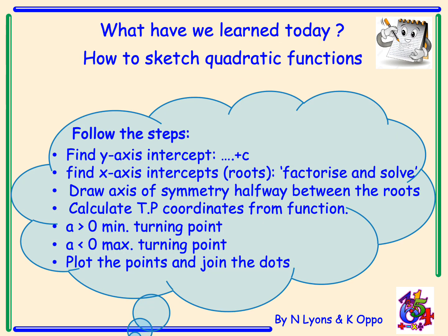So what have we learned today? We've learned how to sketch quadratic functions. We've learned the following steps. Step 1: find the y-axis intercept. Step 2: find the x-axis intercepts. These are called the roots of the quadratic function and to do that we have to factorize and solve our equation. We then have to draw the axis of symmetry which is halfway between the roots. Calculate the turning point coordinates from the function. Remembering if a is greater than zero, it's positive, you have a minimum turning point. If a is less than zero, it's negative, you have a maximum turning point. And all you have to do then is plot the points and join the dots.